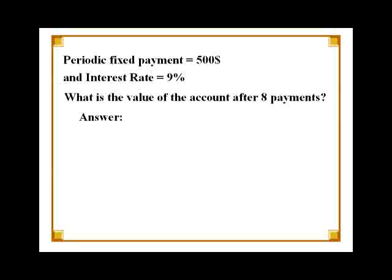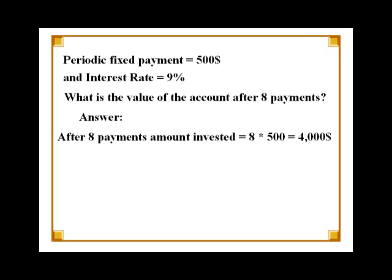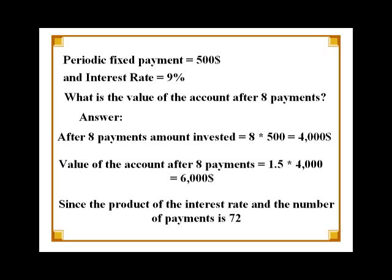Let's take another example. Suppose you are making a fixed periodic payment of $500 to an account at 9% interest. You can get the value of the account after eight periodic payments of $500 by multiplying 1.5 with the total payment you've made so far. In this case, the total payment is $500 times 8, which equals $4,000, and the value of the account is 1.5 times the total payment, which is $6,000.